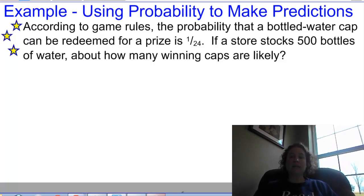So here's an example using theoretical probability. It says, according to game rules, the probability that a bottled water cap can be redeemed for a prize is 1 out of 24. If a store stocks 500 bottles of water, about how many winning caps are likely? So we know that for this game, the water manufacturer has made 1 out of every 24 caps be winners, but we don't know that that exact ratio of winners has been shipped to the store that we're talking about.